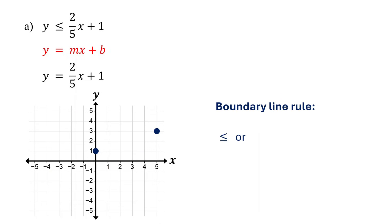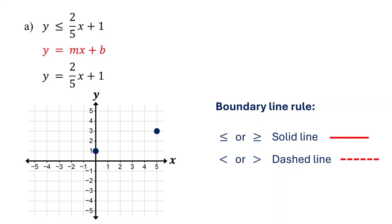If the inequality is less than or equal to or greater than or equal to, use a solid line. A solid line means points on the line are part of the solution to the inequality. If the inequality is strictly less than or greater than, use a dashed line. A dashed line means points on the line are not part of the solution. In this example, the inequality is less than or equal to, so draw a solid boundary line. That completes the first step.